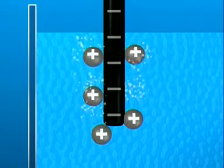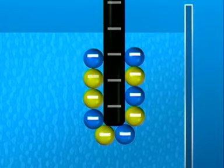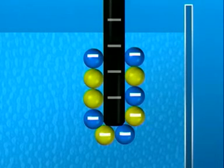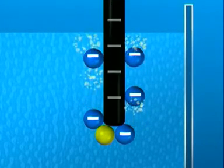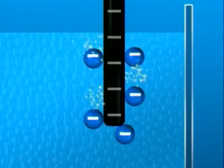Competition also happens at the positive electrode. This time, chloride ions win out, losing their negative charge and forming bubbles of chlorine gas.